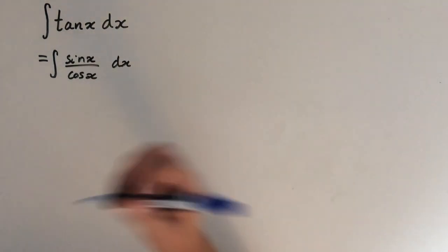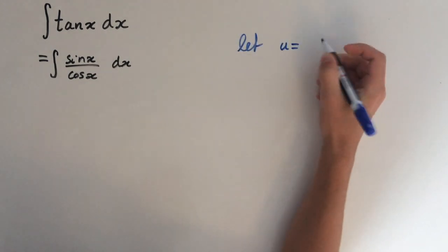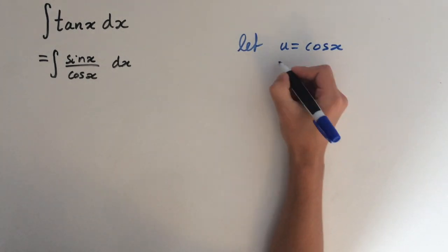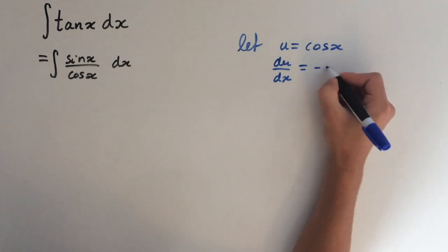And now we're going to use substitution. So we'll let u equal cos(x). Now we differentiate, so we get du over dx equals minus sin(x).